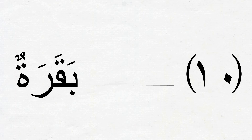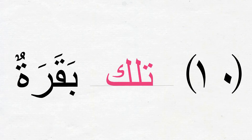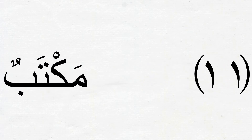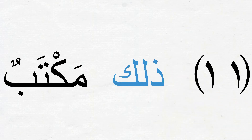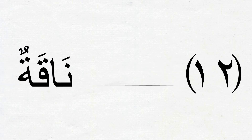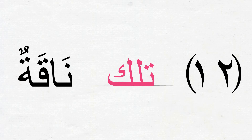Number 10: بَقَرَةٌ means 'a cow'; it is مُؤَنَّث, so it should be تِلْكَ بَقَرَةٌ — that is a cow. Number 11: مَكْتَبٌ means 'a desk' — that is a desk will be ذَٰلِكَ مَكْتَبٌ. Number 12: نَاقَةٌ means 'a she-camel'; تِلْكَ is the appropriate اسم الإشارة here — تِلْكَ نَاقَةٌ, that is a she-camel.